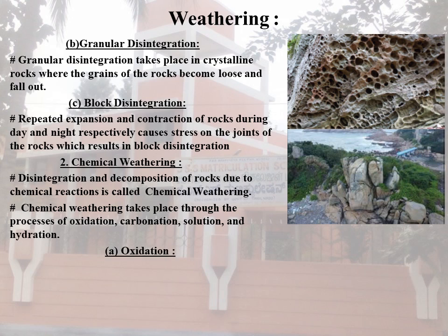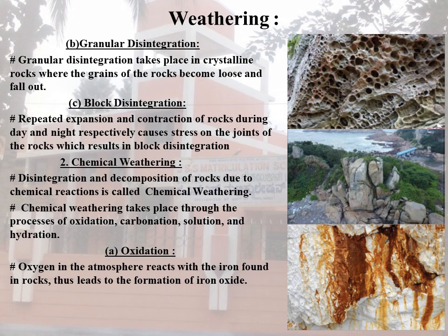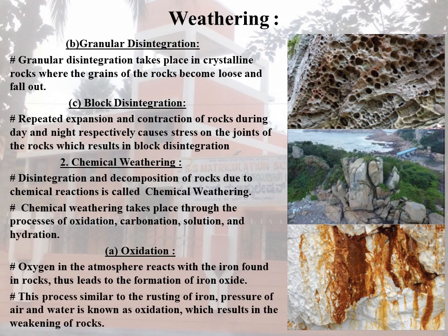The first sub-type of Chemical Weathering is Oxidation. Oxygen in the atmosphere reacts with iron found in rocks. This leads to the formation of iron oxide. This process is similar to the rusting of iron. The presence of air and water causes oxidation, which results in the weakening of the rocks.